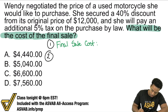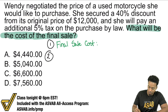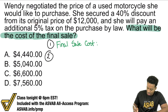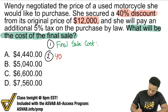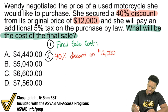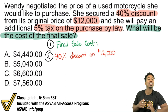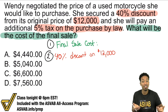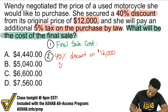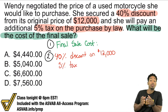Step two — what information do we have? We see that Wendy negotiated the price of an unused motorcycle she would like to purchase. She secured a 40% discount from its original price of $12,000 — so that's definitely worth writing down: 40% discount on $12,000. And then we see that she will pay an additional 5% tax on the purchase by law. All we're doing is writing our information down: 5% tax.